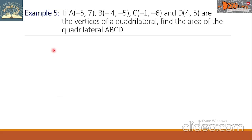Example 5. If A(negative 5, 7), B(negative 4, negative 5), C(negative 1, negative 6), and D(4, 5) are the vertices of a quadrilateral, find the area of quadrilateral ABCD.